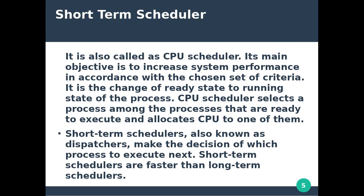The short-term CPU scheduler selects processes that are ready to execute and allocates the CPU to one of them. It is the change of ready state to running state. The short-term scheduler is also known as the dispatcher, and it makes the decision of which process to execute next.